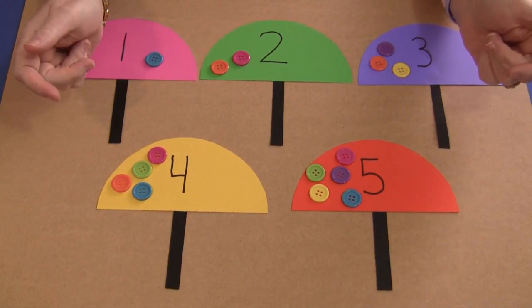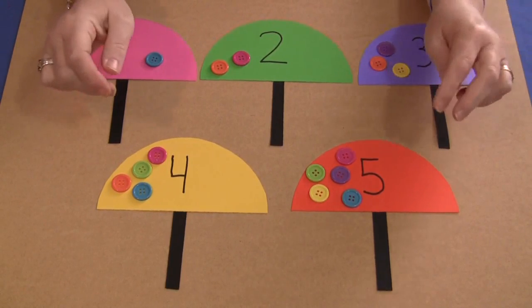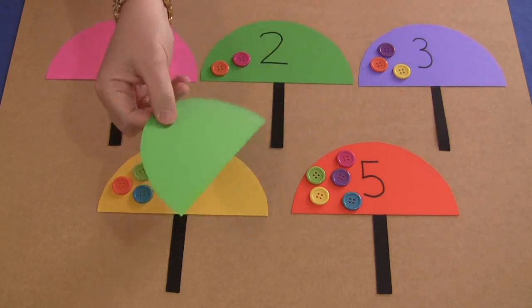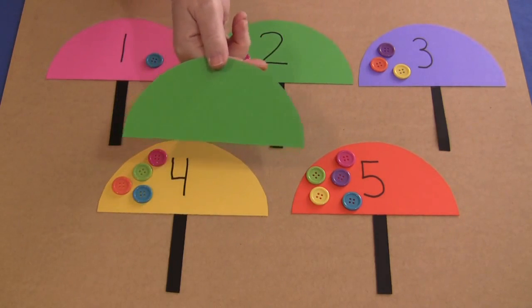Easy to make. All I did was take a sheet of colored cardstock paper, trace a bowl around it, and then cut that in half to make the top of an umbrella.